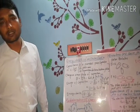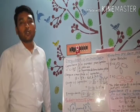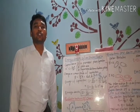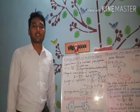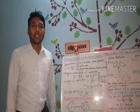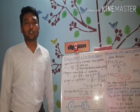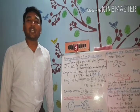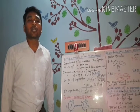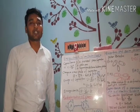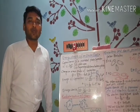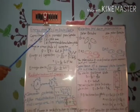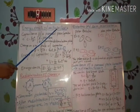In the previous class, we discussed up to the energy stored by a capacitor, as well as the energy stored by series and parallel combination of capacitors. Today we start with the energy density of an electric field.